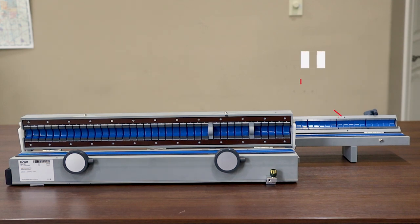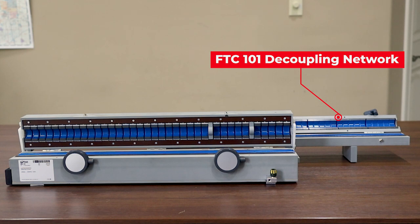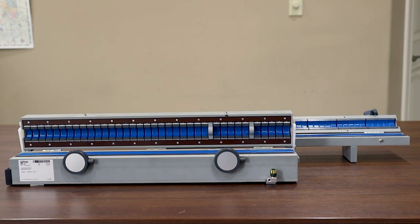We include the FTC-101 decoupling network with the rental of the EM101, which is designed to limit the disturbances only to the cables of interest, and you can see that on the right just behind our EM101. We won't be spending too much time on the ferrite decoupling network today, however we did want to mention it is included with the rental of the EM101. Let's go ahead now and spend some time on the calibration.